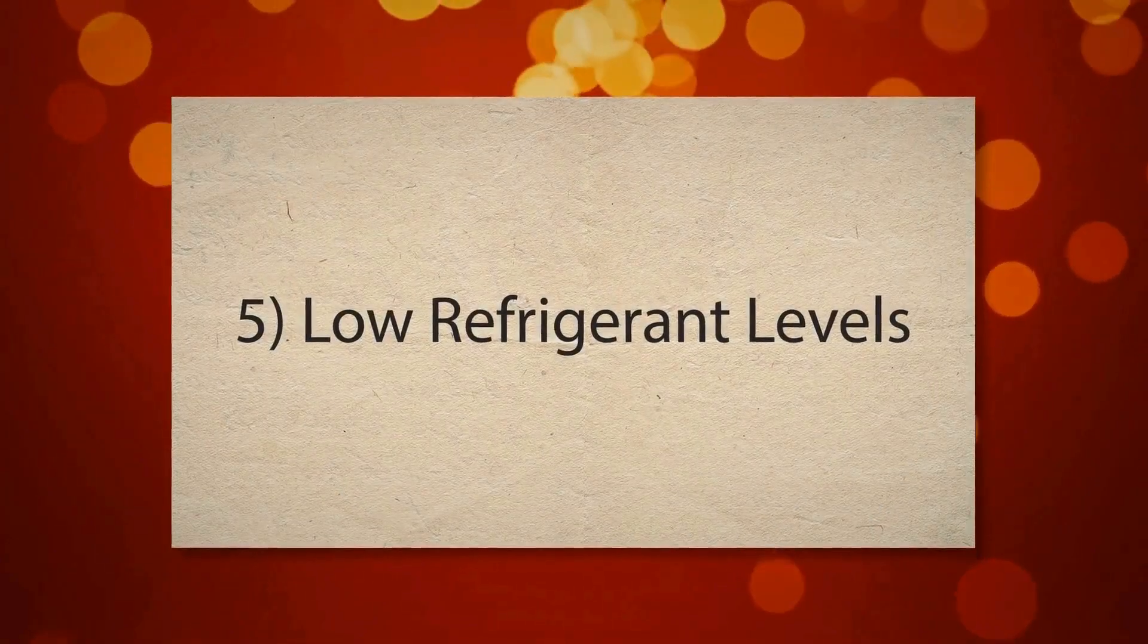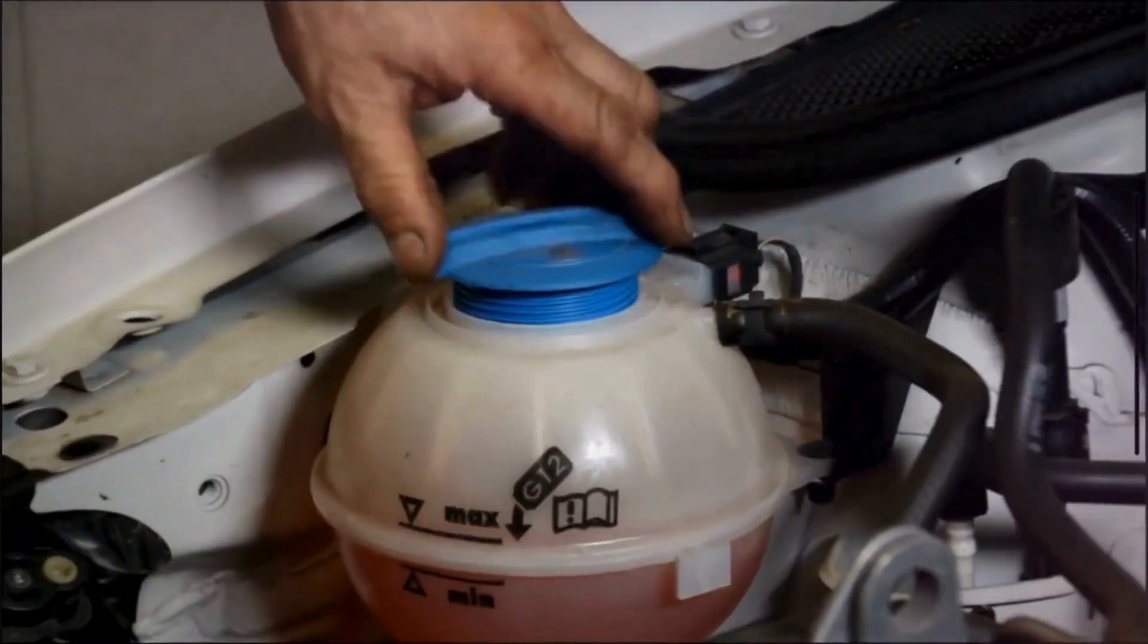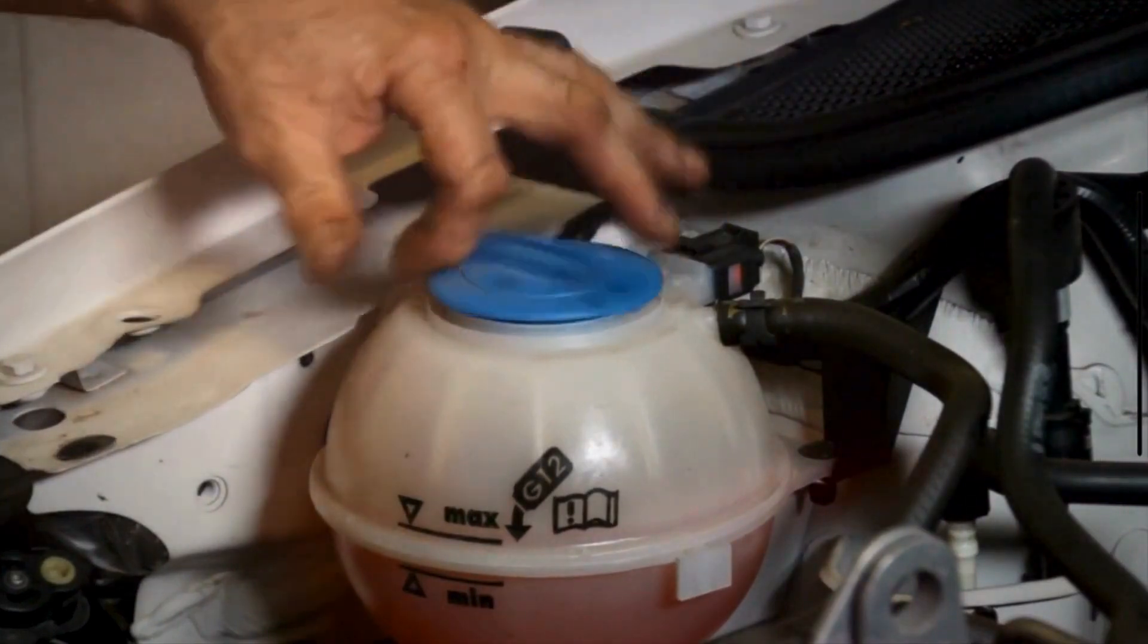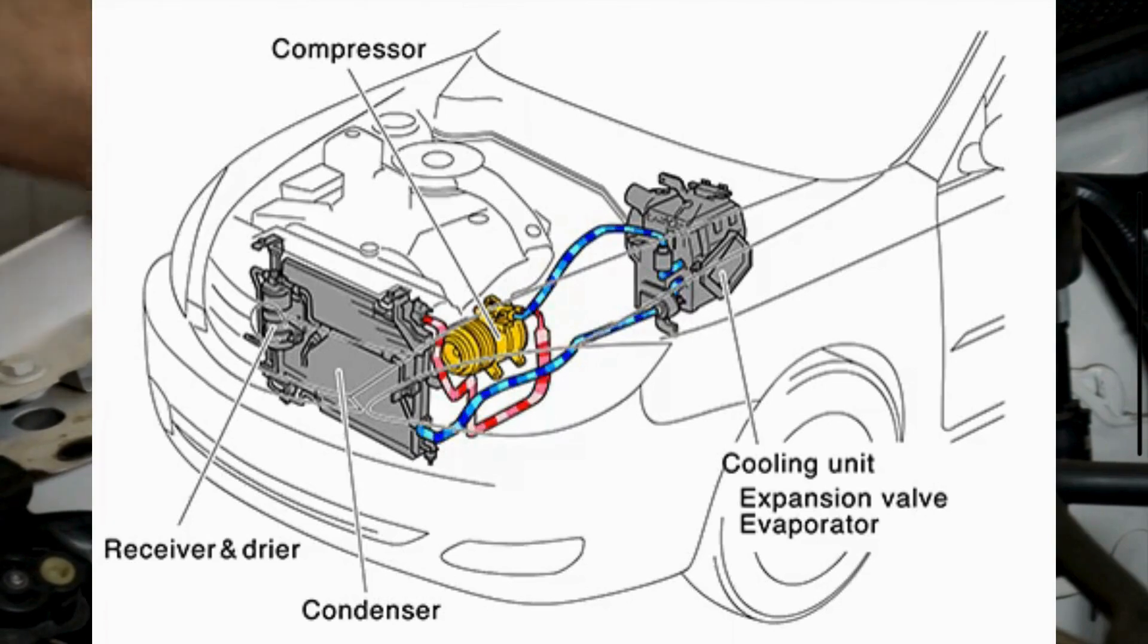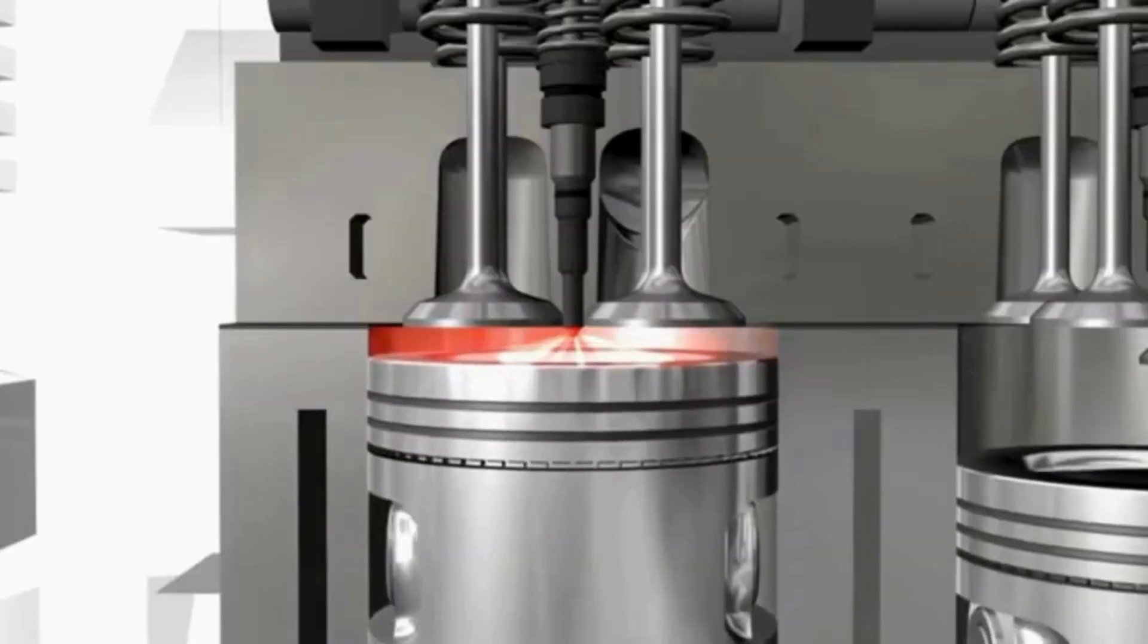5. Low Refrigerant Levels. Low coolant levels can cause the AC system to work inefficiently. The compressor may have to work harder to cool the air, placing additional strain on the engine and potentially causing it to shake due to the increased load.